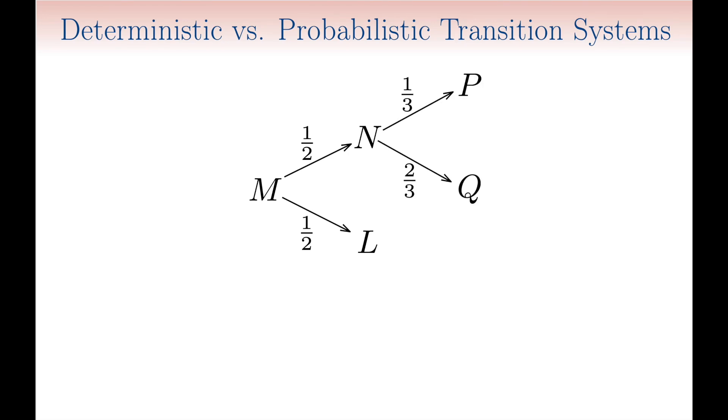And from the former one can evolve to either p and q, with probability 1 third and 2 thirds respectively. In other words, traces of execution are replaced by reduction trees where branching captures probabilistic choice.